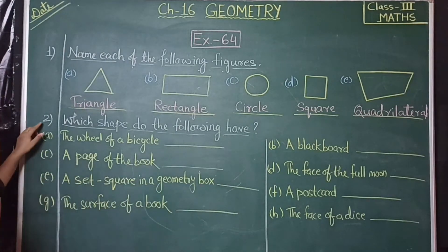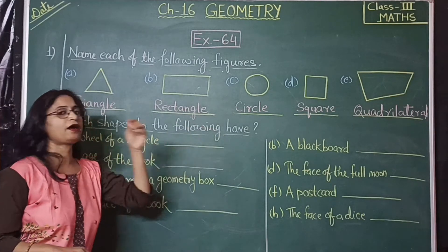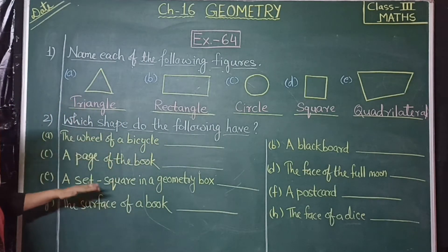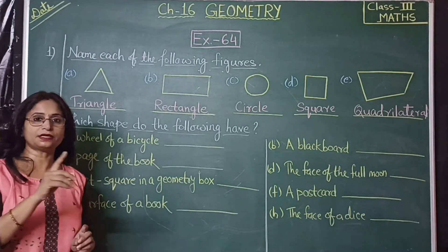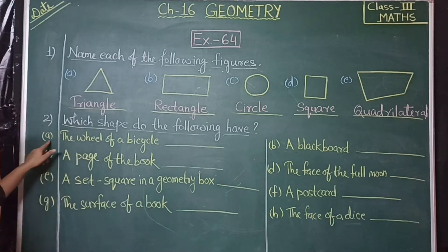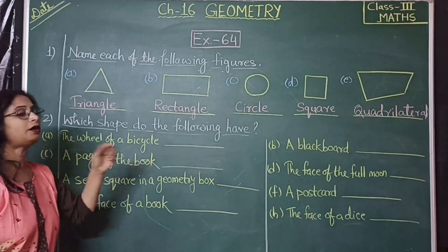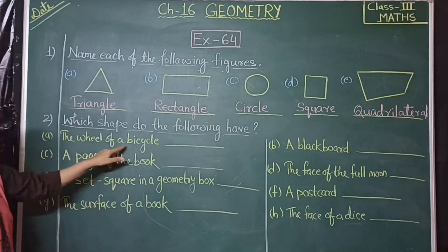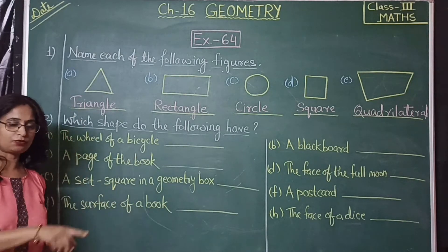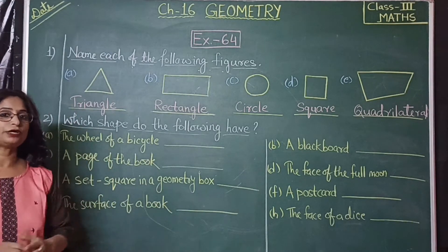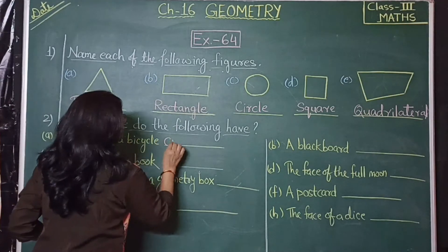Now we will solve Question number 2: Which shape do the following have? Here are some objects that you have to relate to a shape. First, the wheel of a bicycle — it is a full circle, so the shape is circular.